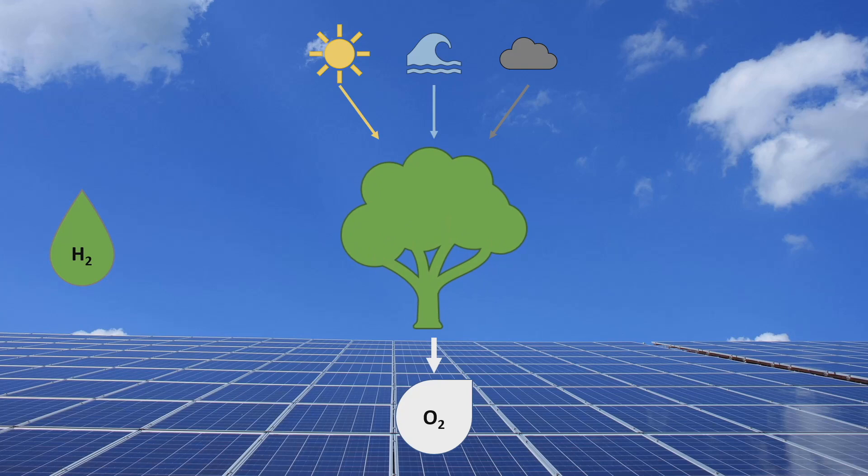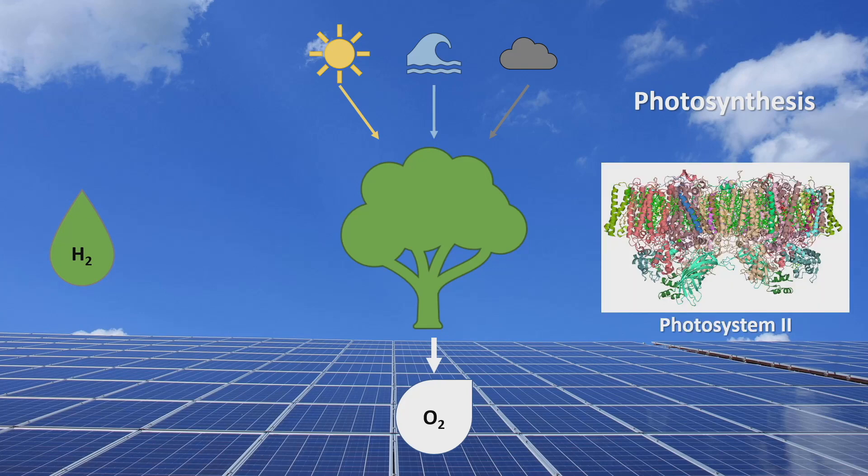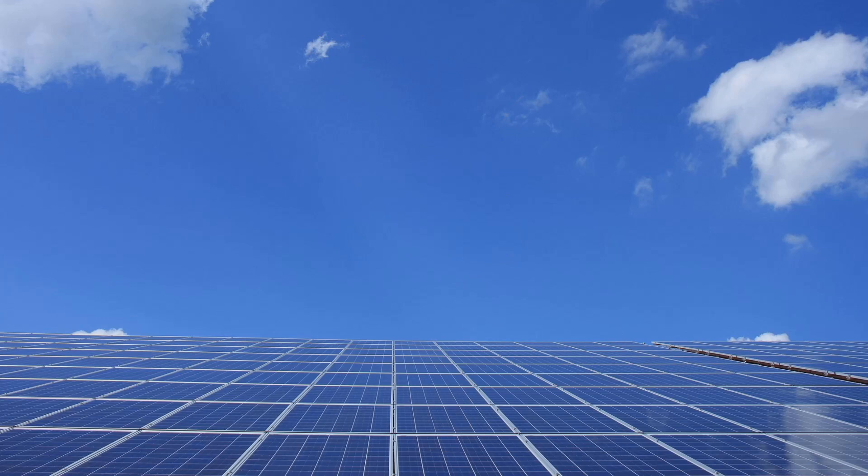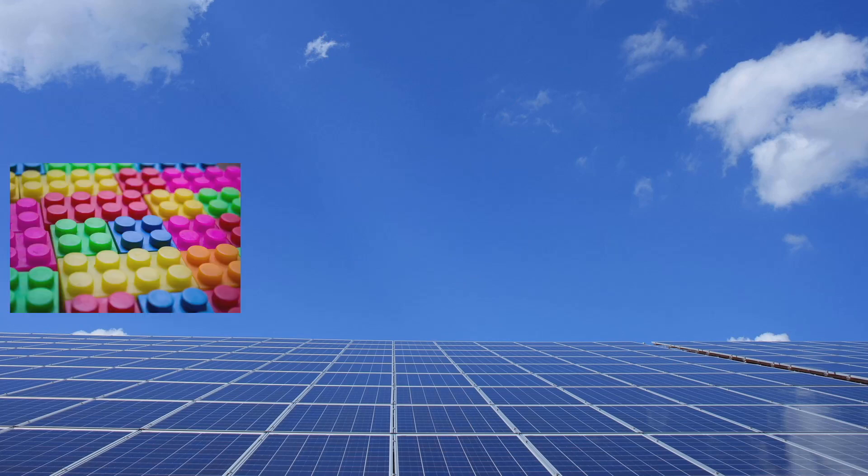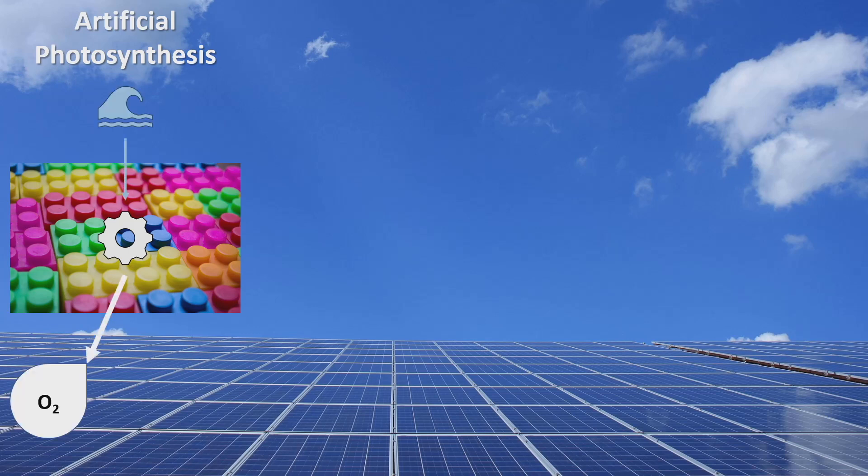On the molecular level, this process is called photosynthesis and it takes place in a protein called Photosystem II. We want to design an artificial protein made of functional polymers with a new kind of catalyst at its center. That catalyst will carry out a form of artificial photosynthesis, turning water into oxygen and hydrogen using sunlight.